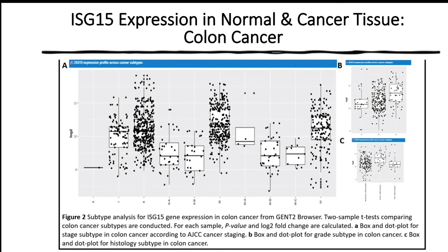The figure on the right depicts stage-wise expression data for colon cancer. The biggest jump in gene expression is experienced between stages 0 and stage 1, indicating that ISG15 is likely important in the initiation of the cancer, but less important in the proliferation and metastasis of the cancer.